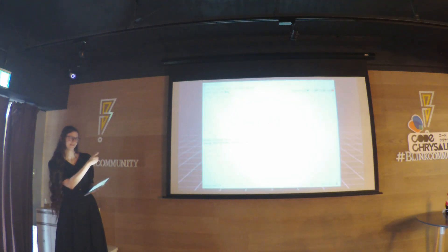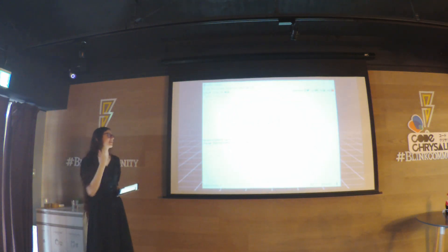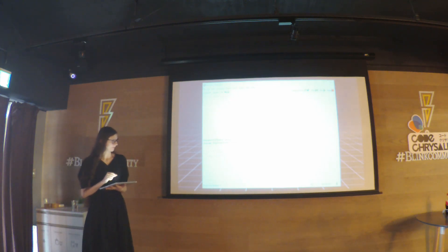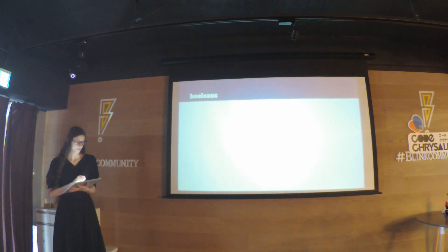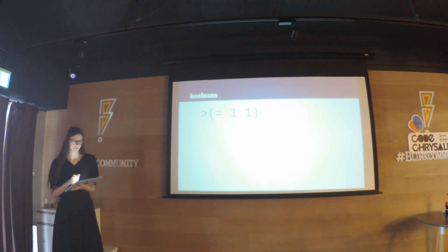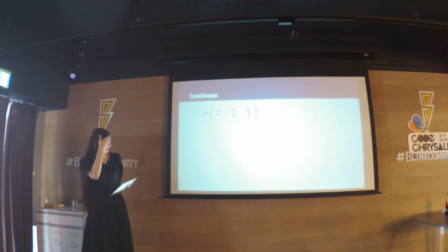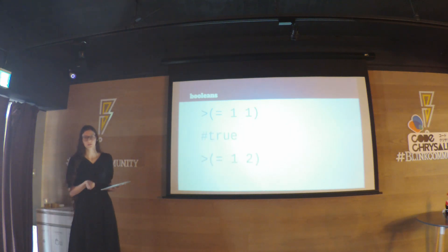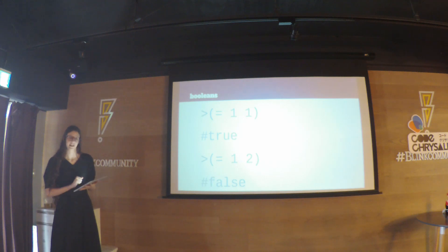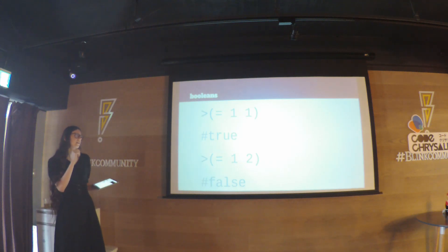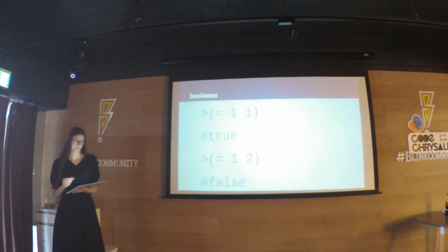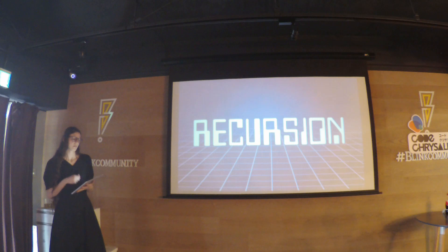Put into DrRacket, defining and calling functions works - you can `double` 4, `double` 2000, `double` 484. Booleans in Lisp work basically like JavaScript except again with prefix notation. Comparing `(= 1 1)` is true; `(= 1 2)` is false. There's something called `cond` which we can use kind of like an if-statement.